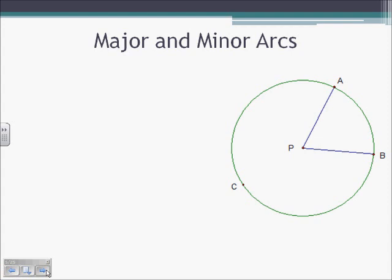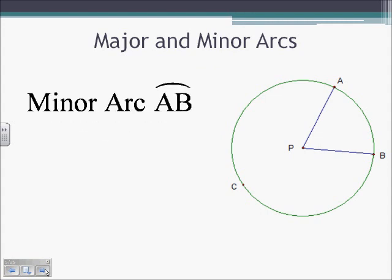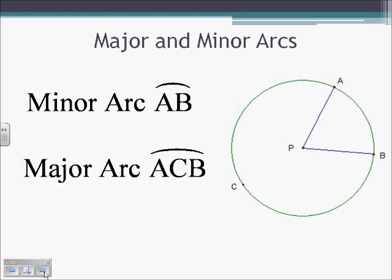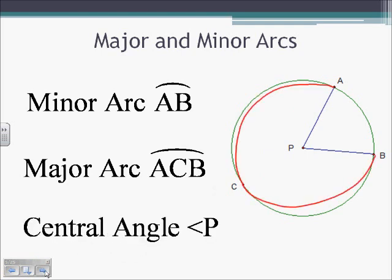For major arcs and minor arcs: the minor arc is AB, going from endpoint to endpoint of our central angle. The major arc is ACB — we need to include that third letter C to give us the direction we're going around the circle, from A all the way over to C and then from C to B to make that arc. The central angle of this picture is P, because that is the angle formed at the center of our circle.